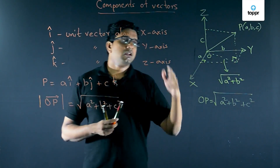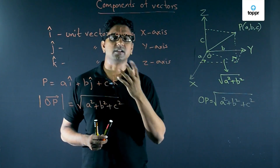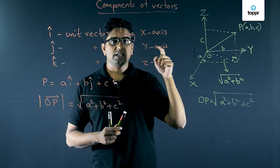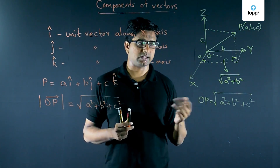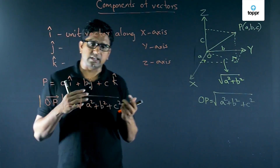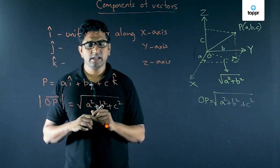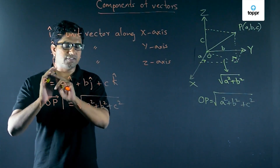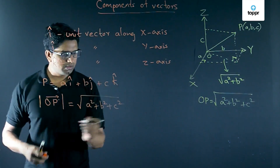Returning to terms associated with vectors: direction ratios and direction cosines. Suppose I give you a vector P = aî + bĵ + ck̂. The direction ratios are simply the scalar components of the vector, so they are a, b, and c.